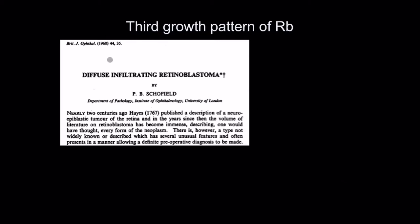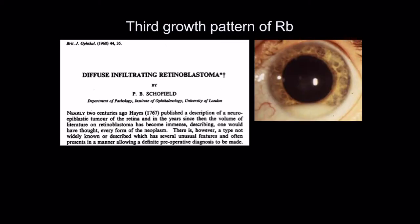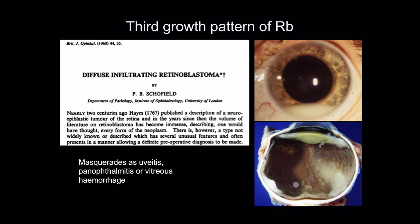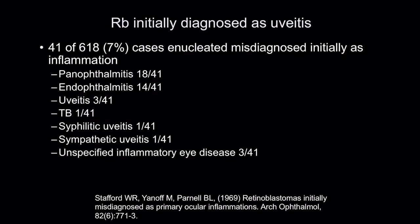This third type of retinoblastoma growth pattern was first described at the Institute of Ophthalmology in a paper in 1960. The photograph from that paper looks almost like the case shown, and the enucleated eye shows a fairly flat, undulating thickening. This type masquerades as uveitis, panophthalmitis, or vitreous hemorrhage sometimes.